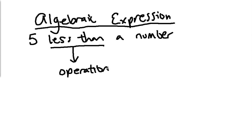So less than, well, that's subtraction. So in this case, the operation equals subtraction. And typically people make the mistake of writing the statement exactly in the order they see it. They say this is subtraction, so it must be 5 minus n.